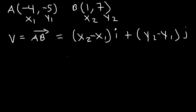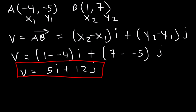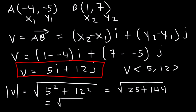x2 minus x1 is 1 minus negative 4, and y2 minus y1 is 7 minus negative 5. So 1 minus negative 4 equals 5, and 7 minus negative 5 equals 12. So we have 5i plus 12j — that's vector V expressed in its components. You can also represent it as (5, 12). Now for the magnitude: the square root of 5 squared plus 12 squared. 5 squared is 25, 12 squared is 144, and 25 plus 144 is 169, so the magnitude is 13.